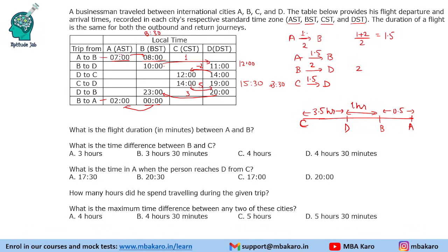Question: What is the flight duration between A and B? The duration between A and B is 1 and a half hours, which is 90 minutes.